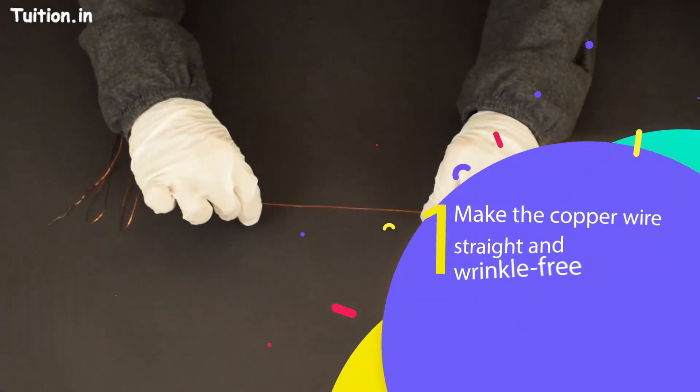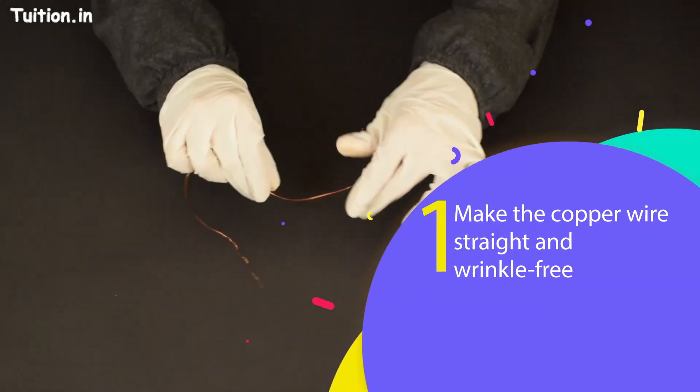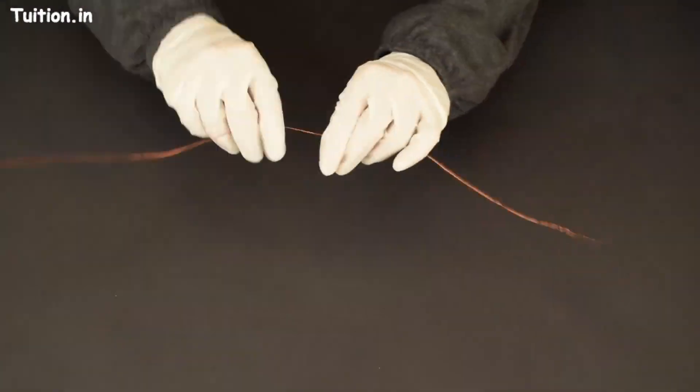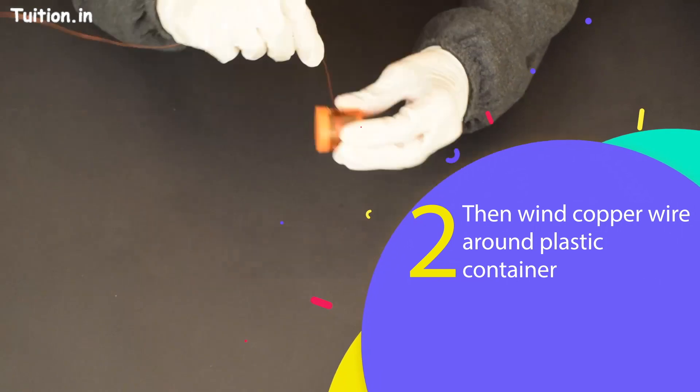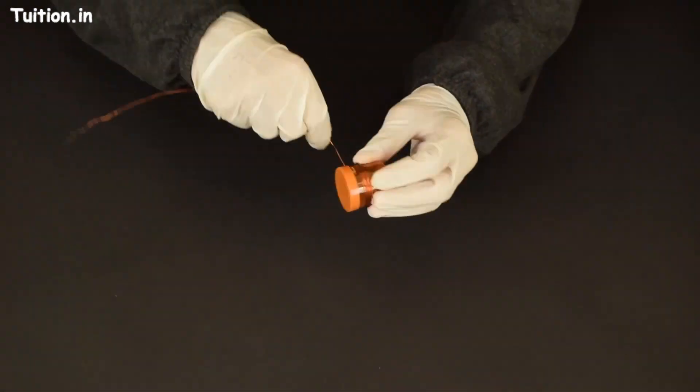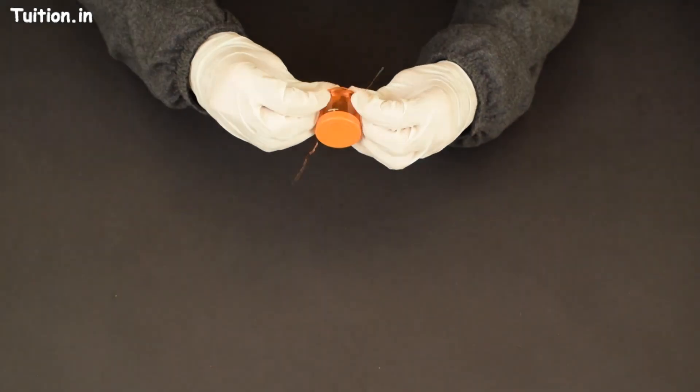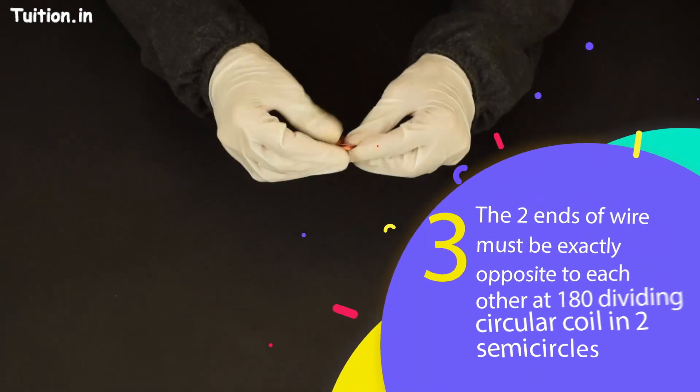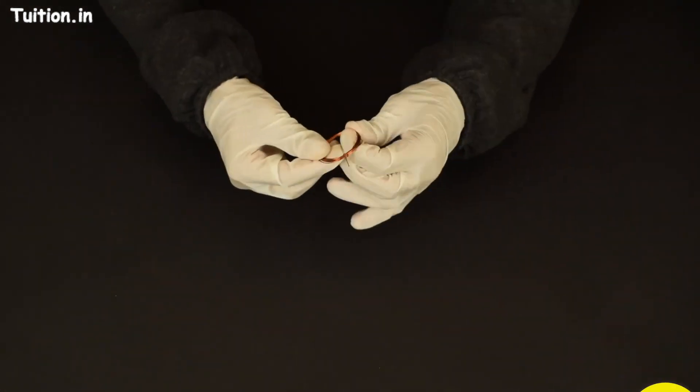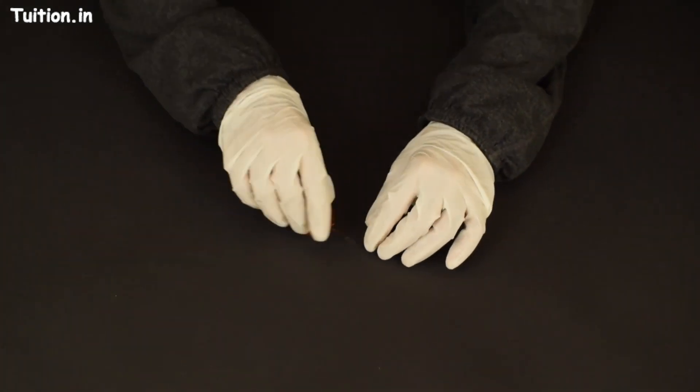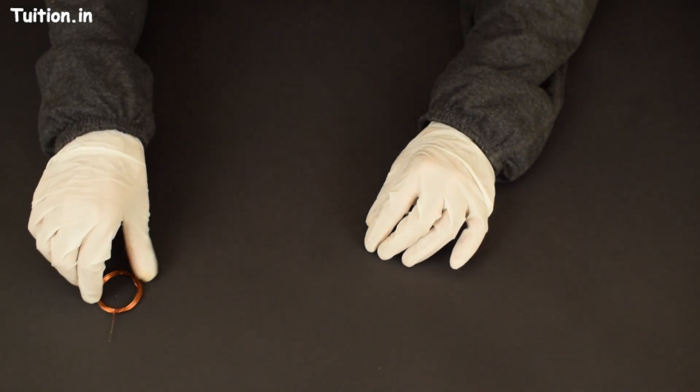Make the copper wire straight and wrinkle free first. Then wind copper wire around plastic container firmly. Carefully take out this coil of copper wire. Keep two ends of copper wire of five centimeters length. The two ends of wire must be exactly opposite to each other at 180 degrees.